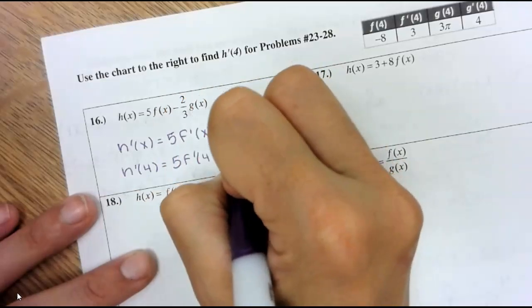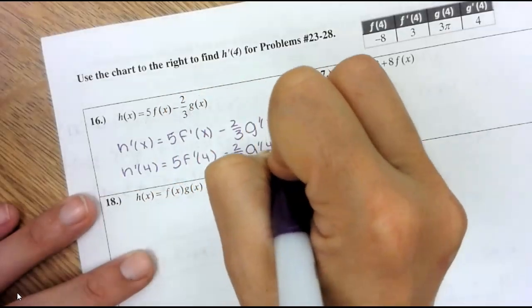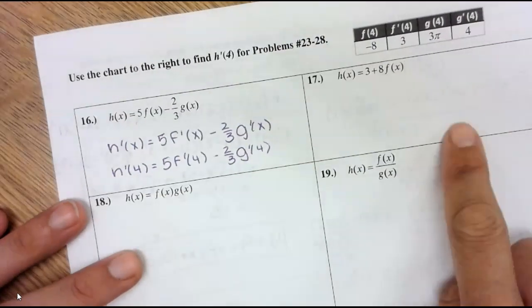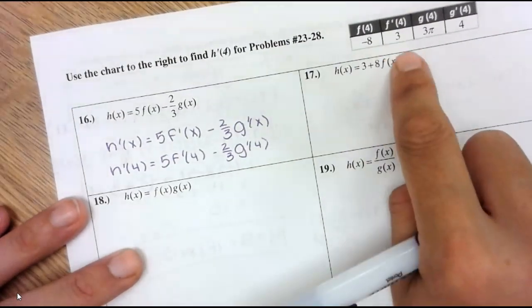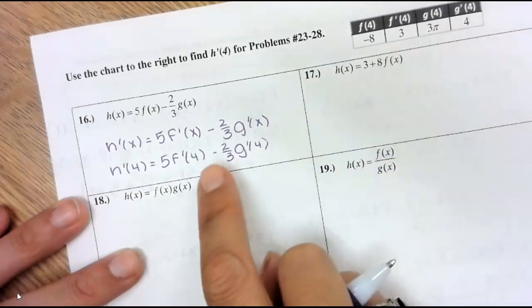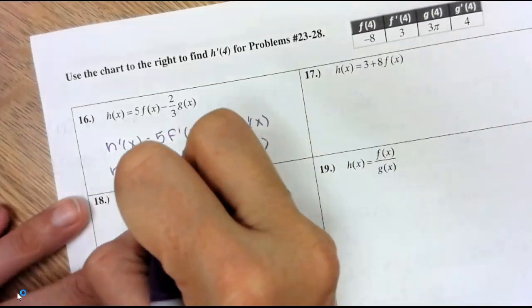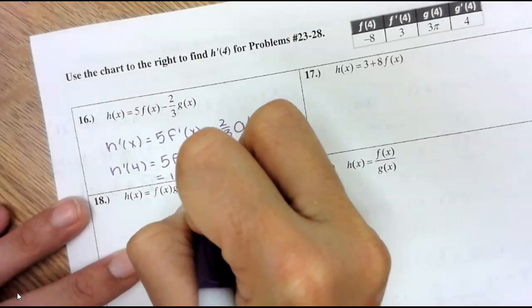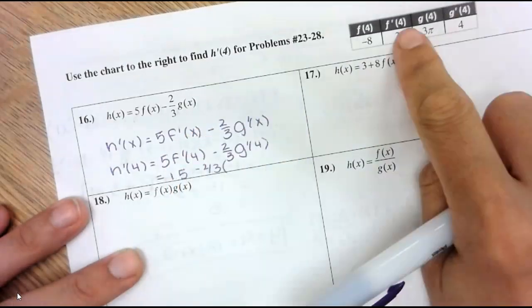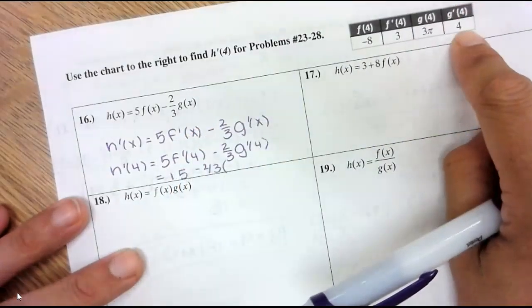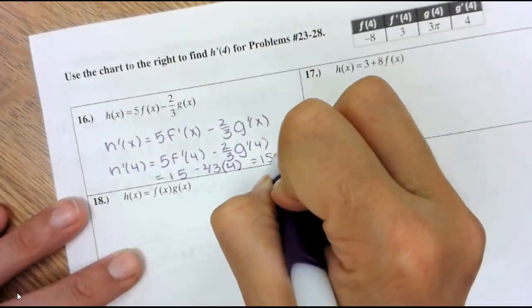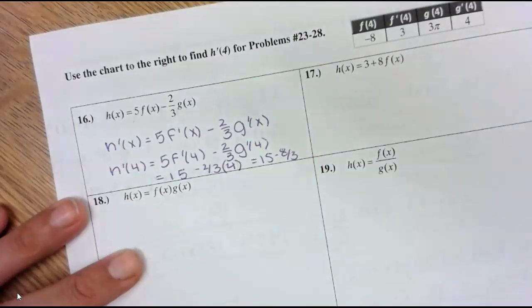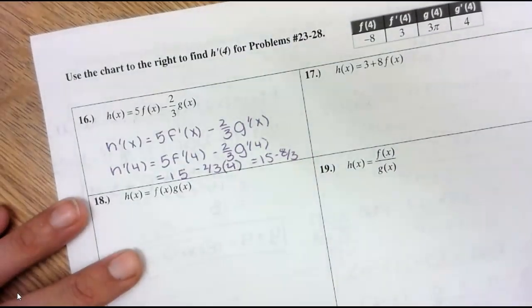So then you fill in 4 for all of the x's, and then you go over to the table and get the values. So f prime of 4 is 3, so 5 times 3 is 15, and then 2 thirds, exactly, and g prime of 4 is 4. So it becomes 15 minus 8 thirds, which is like 37 thirds. Yep.